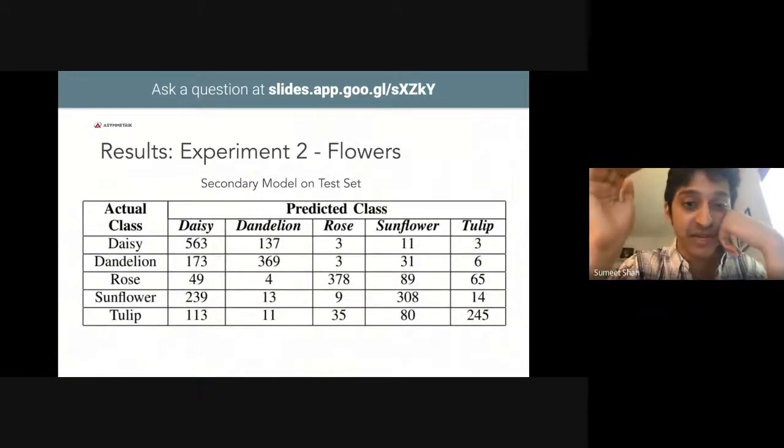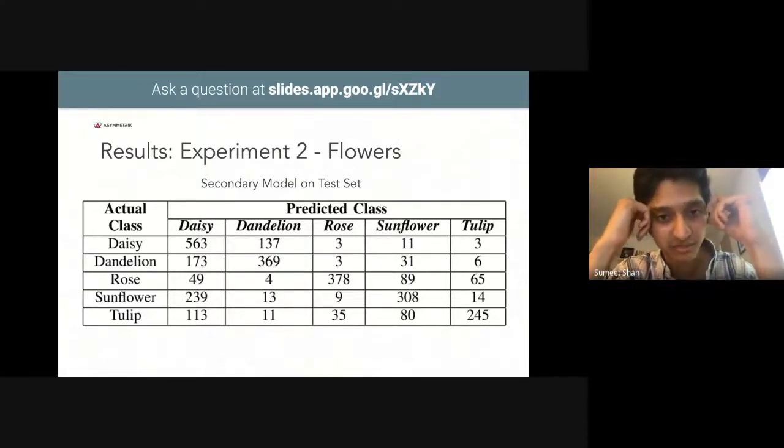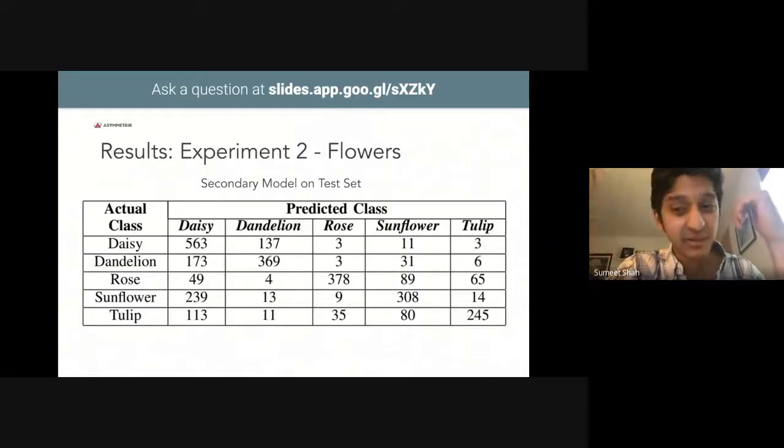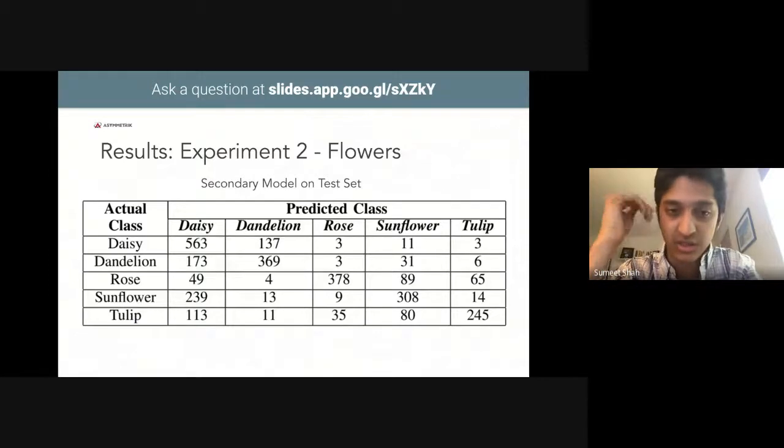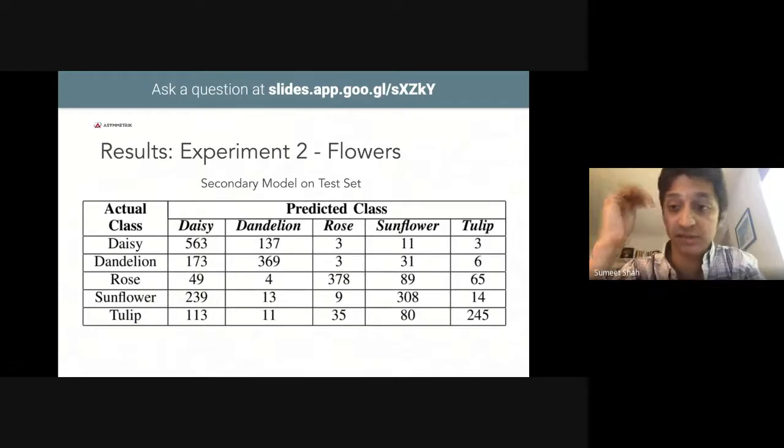This confusion matrix shows the results of the flowers dataset secondary model. This model actually performs pretty well, achieving similar F1 scores as the primary model for daisies, sunflowers, and tulips. The secondary model has learned roses slightly better than the primary model and dandelions slightly worse. As with cats and dogs, the secondary model had only one-fifth of the amount of training data as the primary model. However, 20% for this dataset amounts to just under 150 images.